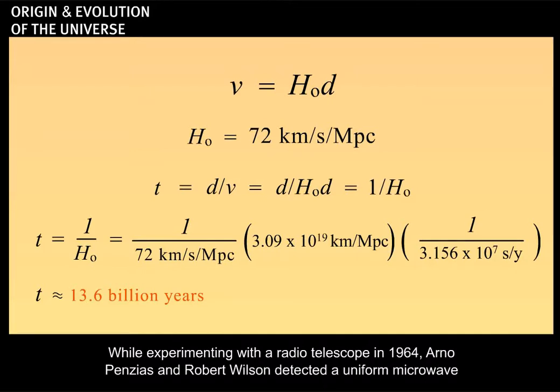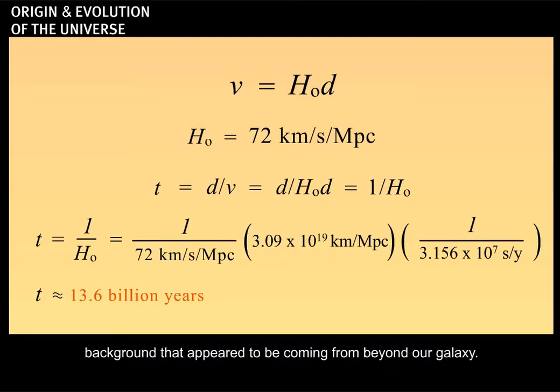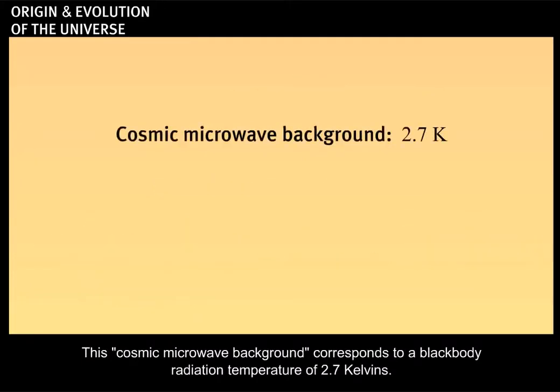While experimenting with a radio telescope in 1964, Arno Penzias and Robert Wilson detected a uniform microwave background that appeared to be coming from beyond our galaxy. This cosmic microwave background corresponds to a black body radiation temperature of 2.7 Kelvin.